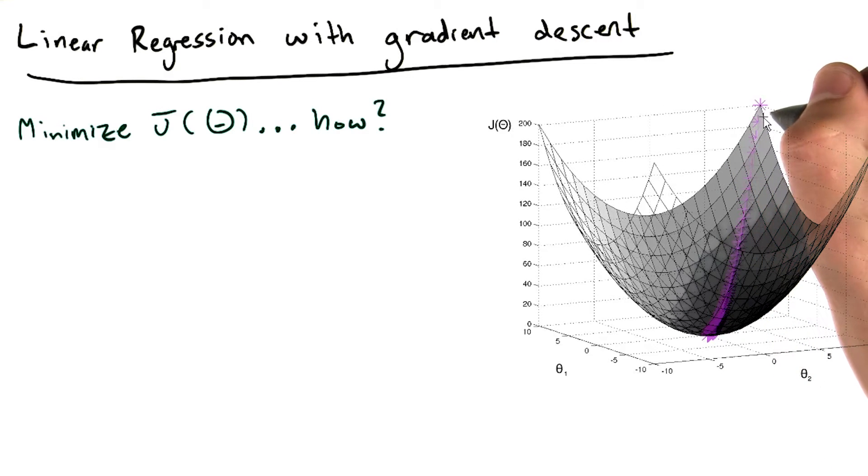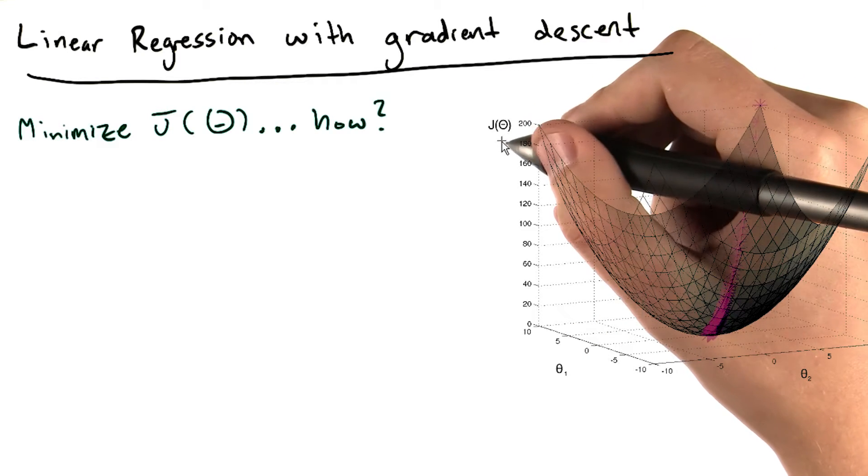Here again, we see that we start at some high value of J of theta, and we continue to iteratively update theta 1 and theta 2 until we arrive here, the global minimum of J of big theta.